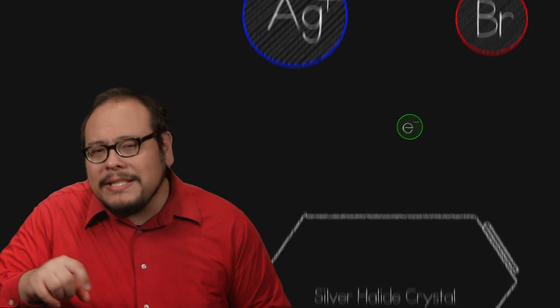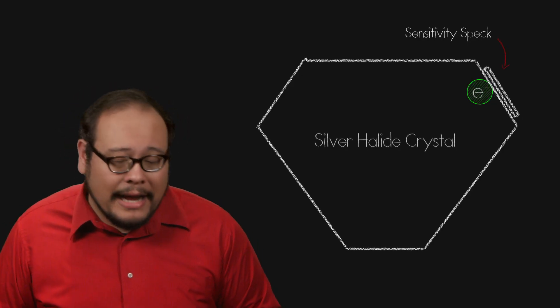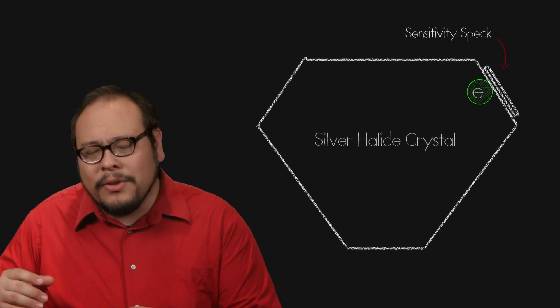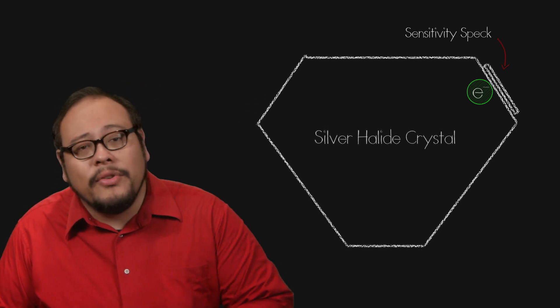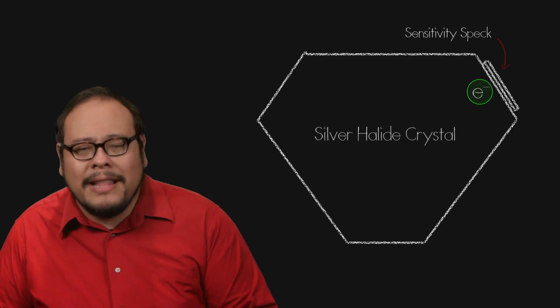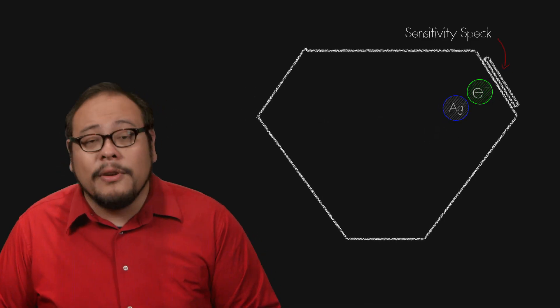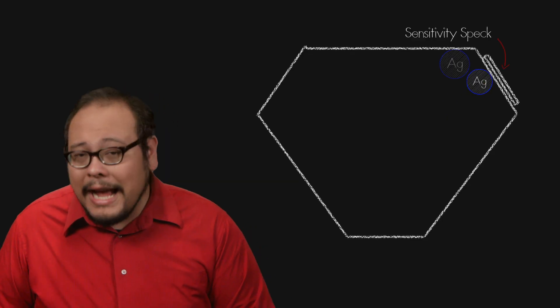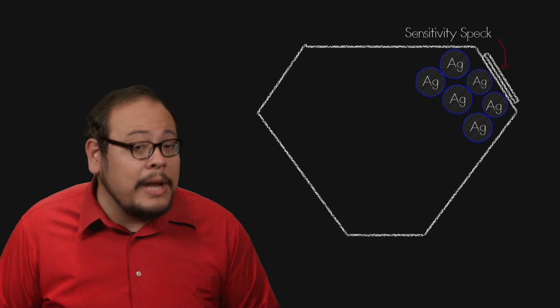This free electron migrates in the crystal toward the portion of the crystal called the sensitivity speck, a shallow electron trap that is either a deformity or a piece of silver sulfide or gold added to the crystal in the manufacturing process. At the sensitivity speck, the electron bonds with a positively charged silver ion to produce a free silver atom. The more intense the light hitting the crystal grain, the more free silver atoms are created.